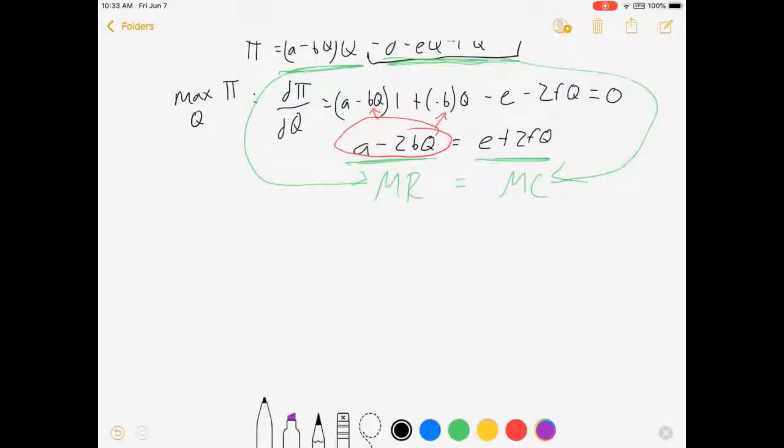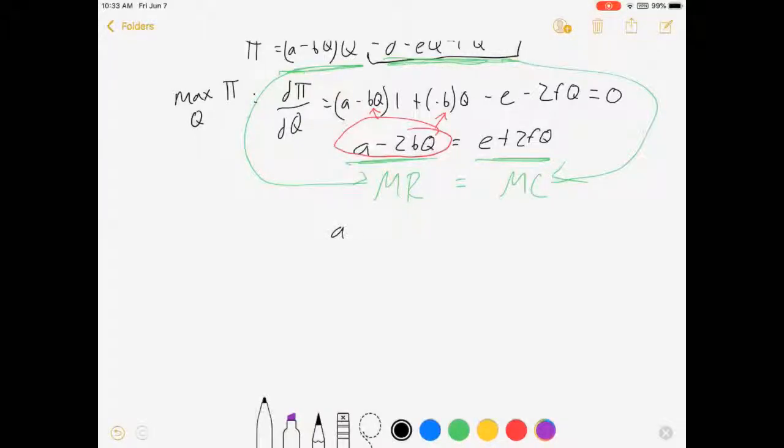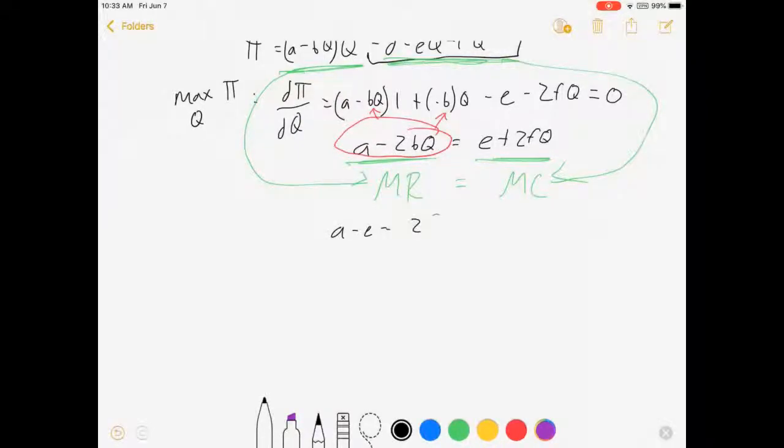All right. Now we can solve for Q. So let's see, that's A minus E is equal to 2B plus F times Q, which means A minus E over 2B plus F equals Q star. That is the profit maximizing Q.